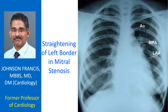Straightening of the left heart border in severe mitral stenosis has been reported by Chadda et al. They noted that the aortic knuckle, dilated pulmonary artery, prominent left atrial appendage, and left ventricular left border are almost in a straight line. This straightening of the left border has also been called mitralization of the heart.